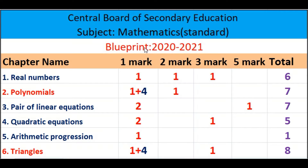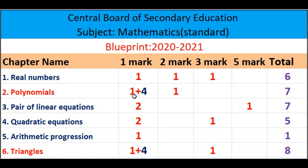Here you can see the chapter-wise marking scheme. From the first chapter, Real Numbers, one question for one mark, one question for two marks, and one question for three marks will be asked, and a total of six marks will be asked from the chapter Real Numbers.